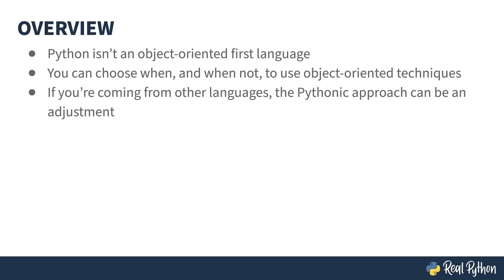If you're coming from other languages, especially those which are object-oriented first, this leap can be a bit of an adjustment. If you're an experienced coder in one language, your first tendency when writing code in a new language is to use the style you're familiar with, even if it isn't a good fit. As a Python coder, if you come across a lot of object-oriented code where you're wondering why they didn't just use a dictionary, there's a good chance the original writer was an ex-Java person or something similar.